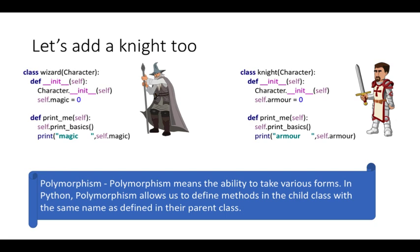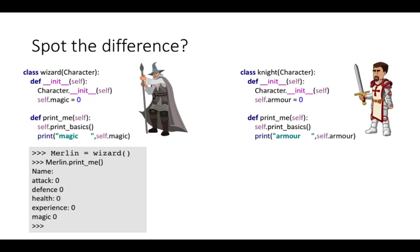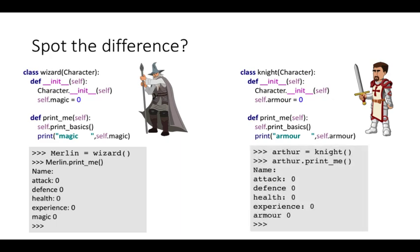So we've got a wizard, we've got a knight. Now polymorphism means the ability to take various forms. In Python, polymorphism allows you to define methods in the child class with the same name as defined in their parent class. So have a look at this. Okay, can you spot the difference? Yeah, dear old Merlin here or the wizard class has magic, but the armor is only available for knights. So when you use print_me, it immediately prints magic and armor for the two child classes. And that is really cool because you can call the same idea and it does different things.